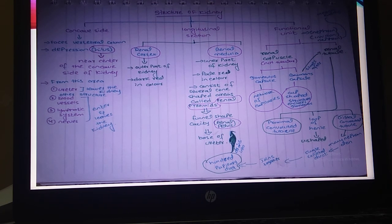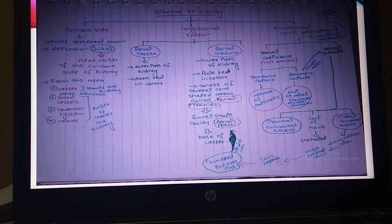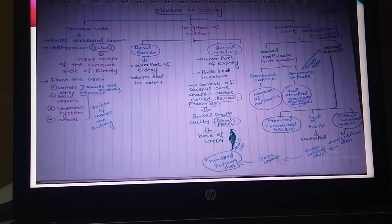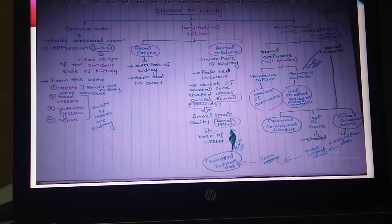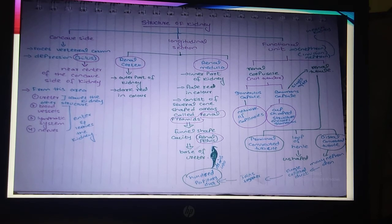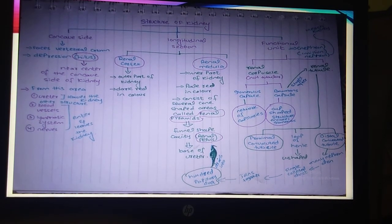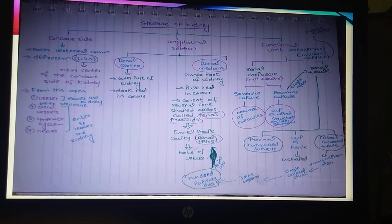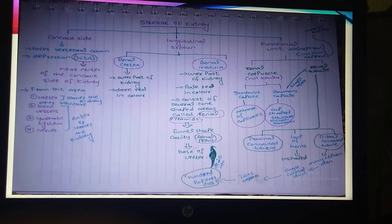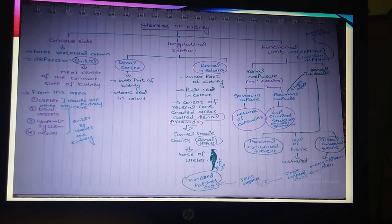اگر آپ اس کو سمجھ لوگے تو اس کے نوٹس آپ کو آگے مل جائیں گے پوائنٹس کی صورت میں۔ سٹرکچر آف کڈنی میں تین باتیں کی گئی ہیں - کونکیف سائٹ، لونگیچوڈنس سیکشن اور فنکشنل یونٹ۔ کونکیف سائٹ میں ہائیلس والا ایریا ہے یہاں پر یوریٹر ہوتا ہے جو کڈنی کو لیف کر دیتا اور باقی سٹرکچر بھی پردر ہوتے ہیں جیسے کہ بلیڈ ویسلز، لیمفیٹک سسٹمز اینڈ نیرز۔